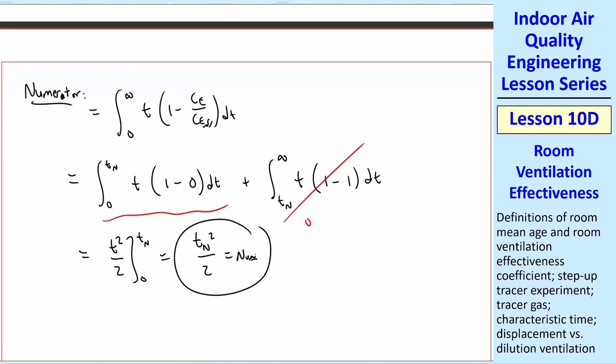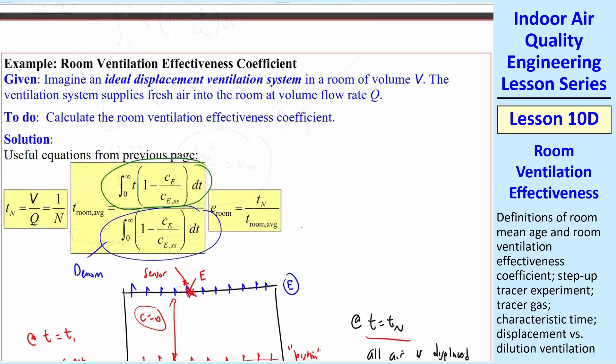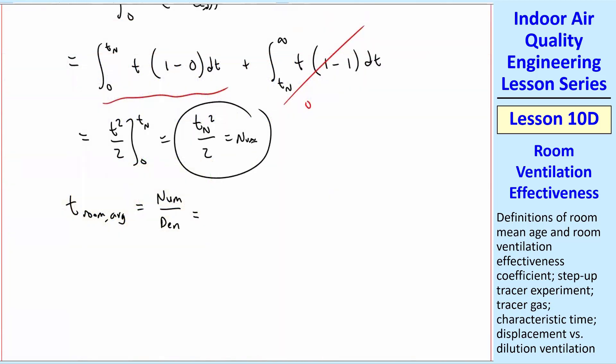Once we have the numerator and the denominator, we can write T room average is numerator over denominator. It's actually this equation. This is T room average, numerator over denominator. We've calculated both of these, and so we get our answer for T room average. We end up with TN over 2 equal our T room average for this example of ideal displacement ventilation.